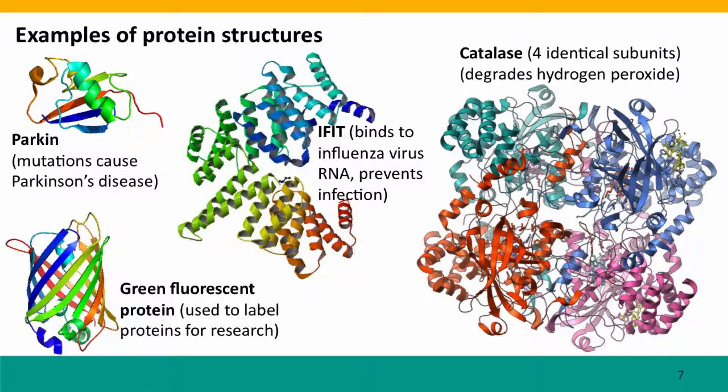Now, here's some examples of protein structures. Starting with quite a simple little protein called Parkin, even this is probably 10 times more complicated than the protein in the animation. Mutations in Parkin cause Parkinson's disease. That's how it's got its name.